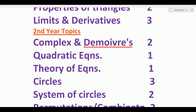The first topic of second year first preference is complex numbers and De Moivre's theorem. If you have four questions, you can use two days to complete complex numbers. The next topic is quadratic equations — one day is enough. Theory of equations is also one day. Next, a major topic: circles and system of circles. You have to spend three days on circles.